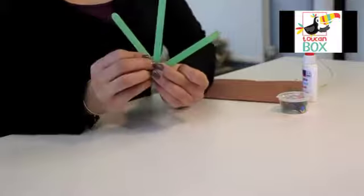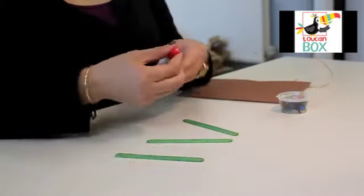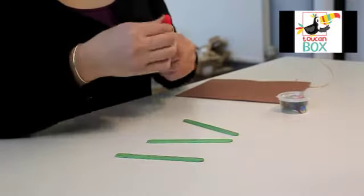We'll start by taking the 3 green lolly sticks. Taking our white glue and putting a dot of glue at each end of the lolly stick.